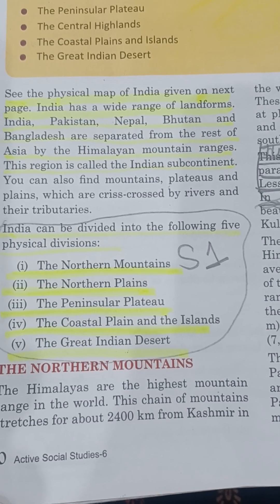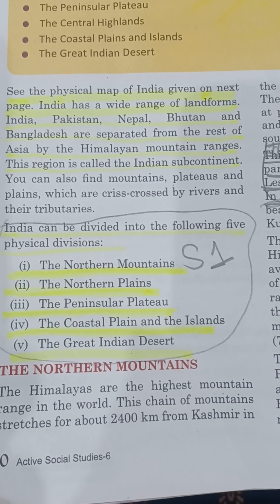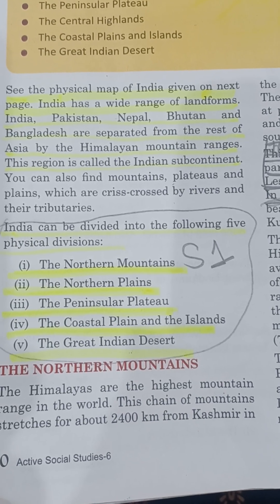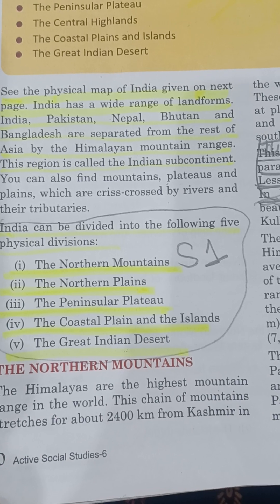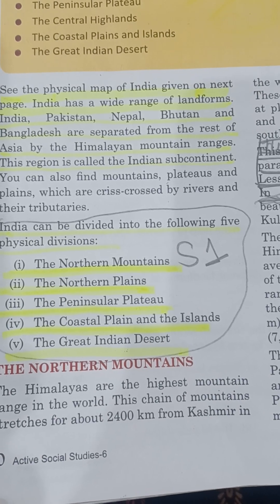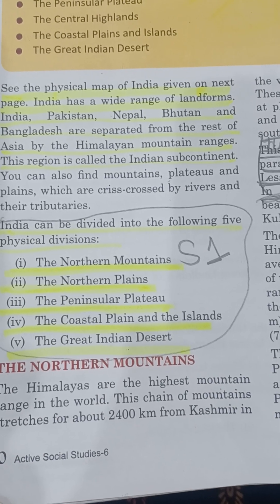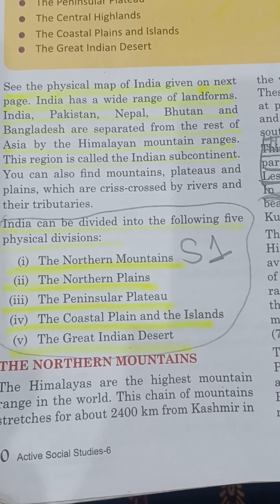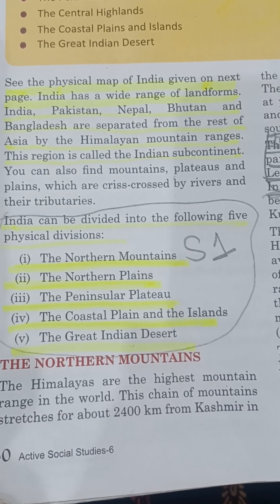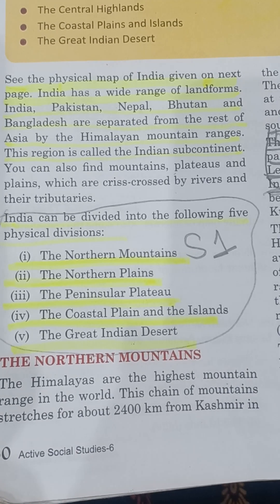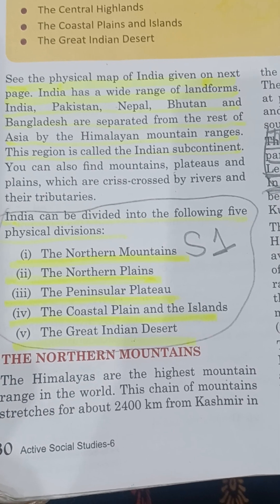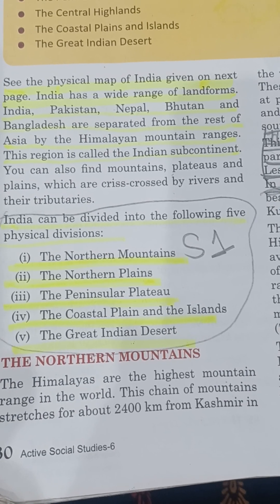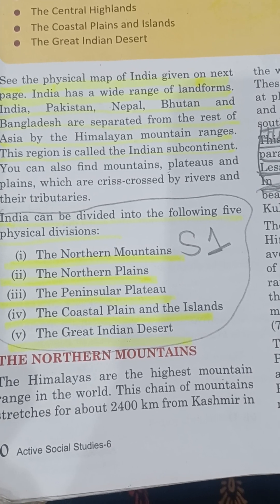Number one: northern mountains. Number two: northern plains. Number three: peninsular plateau. Number four: coastal plains and islands. Number five: the great Indian desert. Now we will talk about the northern mountains.